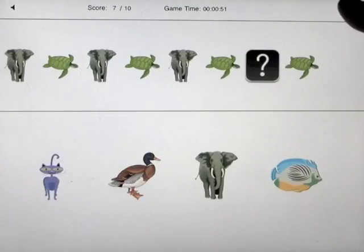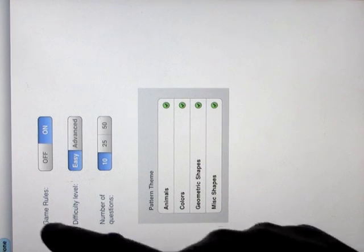Perfect. But that's really all there is to it. There's nothing unusual. Animals, colors, geometric shapes, miscellaneous patterns, game rules on or off. Obviously, we can turn that off, which is the setting we looked at at the beginning. Let's look at the